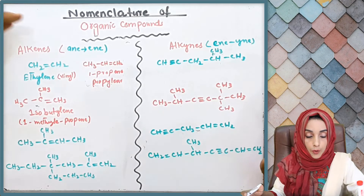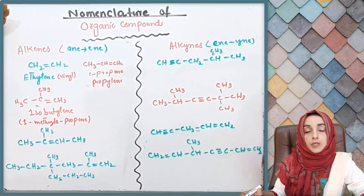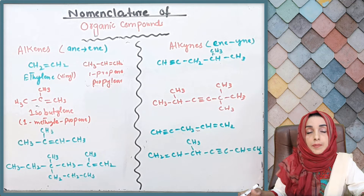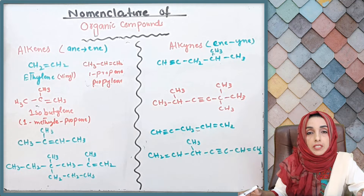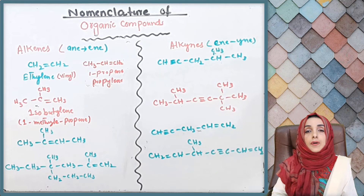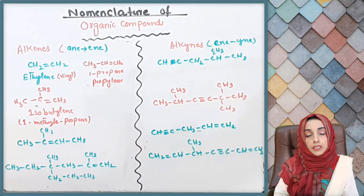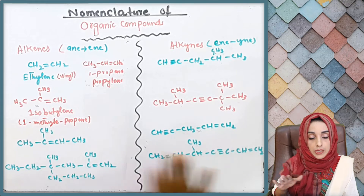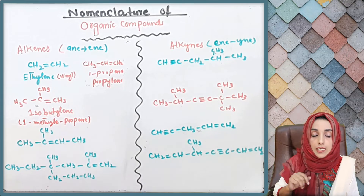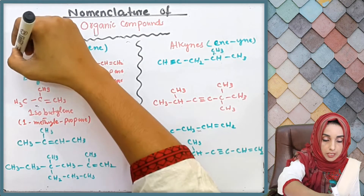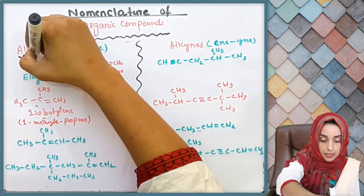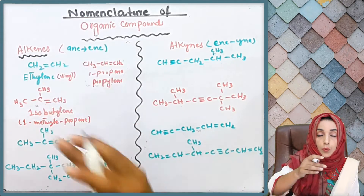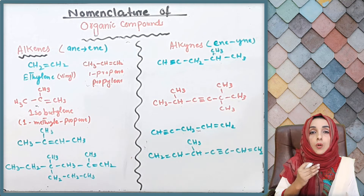Now let's look at another important type of organic compound — alkenes. When we talk about alkenes, we were discussing saturated hydrocarbons where all bonds are single bonds. But alkenes are the type of hydrocarbons in which a carbon-carbon double bond is present within the molecule.